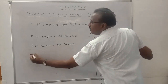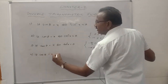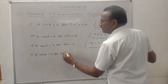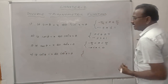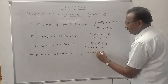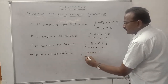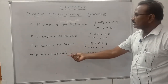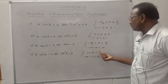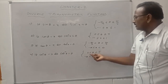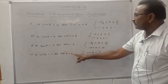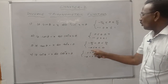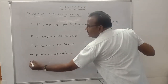For cotangent: cot theta equals x if and only if cot inverse x equals theta, where theta lies in the open interval 0 to pi, since cot 0 and cot pi are both undefined. The domain of cot inverse x is the set of all real numbers, and the range is the open interval 0 to pi.